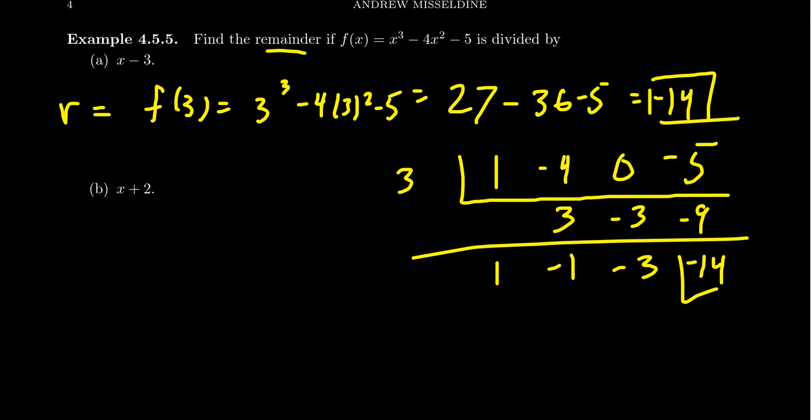What if we do x plus 2? Well, the claim by the remainder theorem is that the remainder, if you divide by x plus 2, will be f(negative 2). Make sure you switch the sign. And so we end up with negative 2 cubed minus 4 times negative 2 squared minus 5. Negative 2 cubed is negative 8, negative 2 squared is a positive 4 times negative 4 gives us negative 16 minus 5. And so combining those together, negative 8 and negative 16 gives us negative 24 minus 5 gives us negative 29.